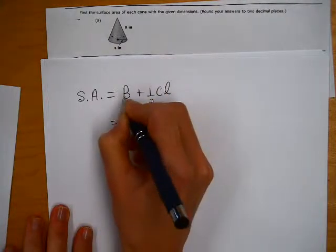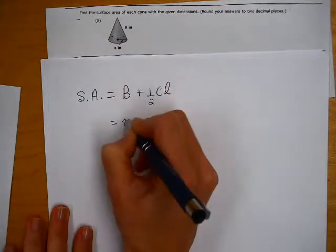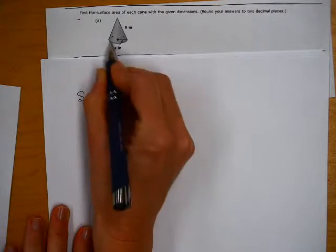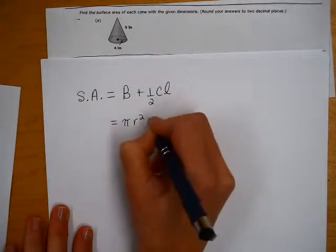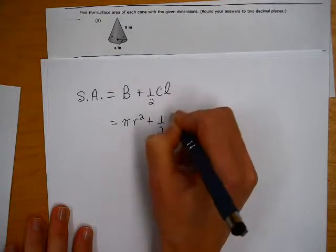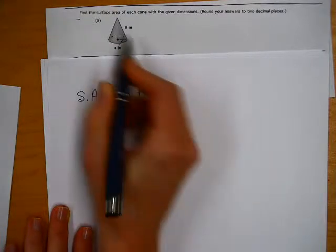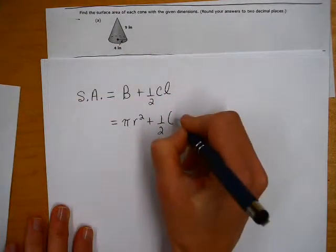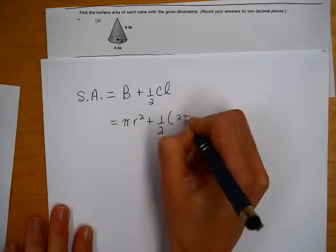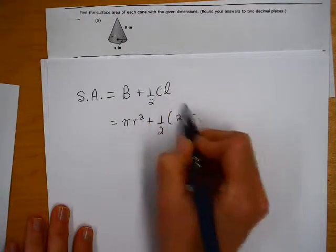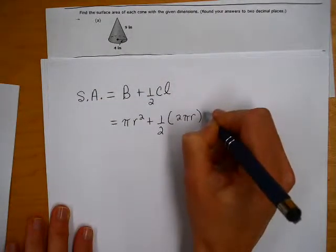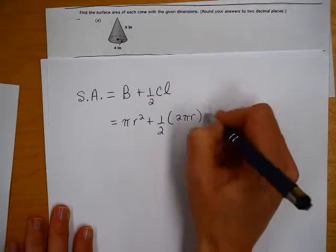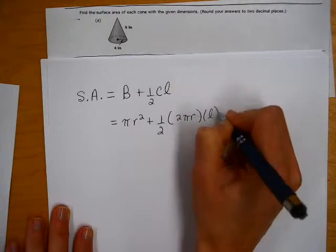And so I'm going to write that surface area formula from my formula sheet. The big capital B stands for area of the base. Well, the base of a cone is a circle, and area of a circle is pi times radius squared, plus one-half times C, the circumference of this circle. So circumference is two times pi times the radius, we'll use that for the C, because we're given the radius here, times the slant height, which is simply L.